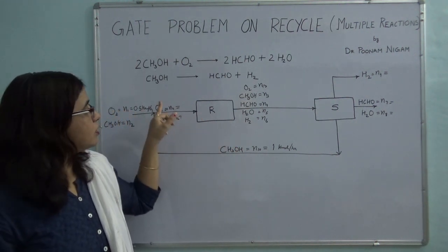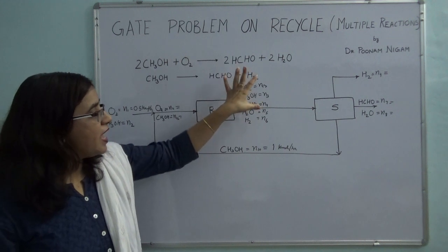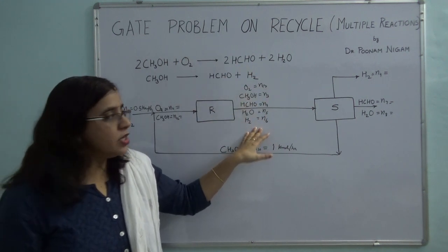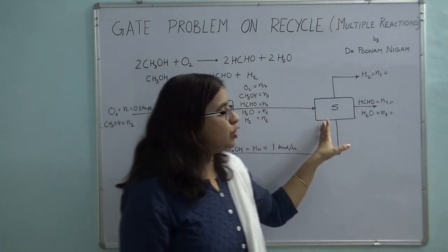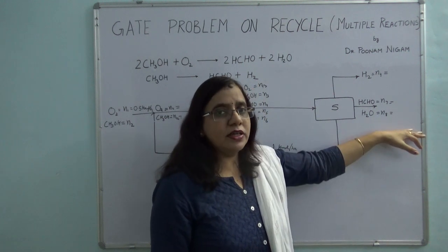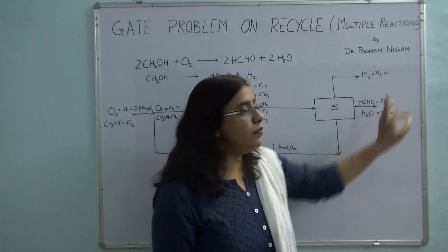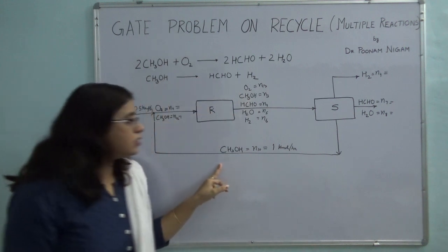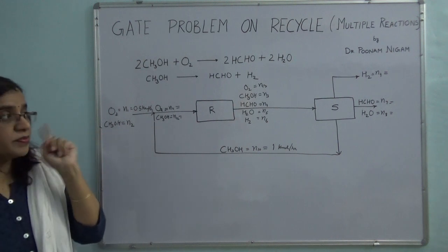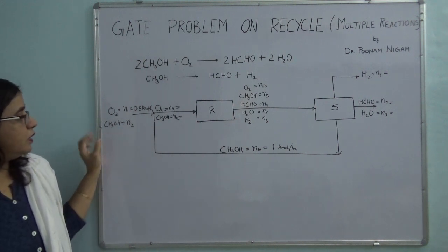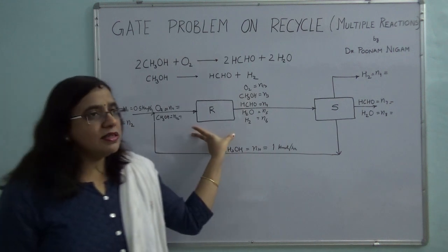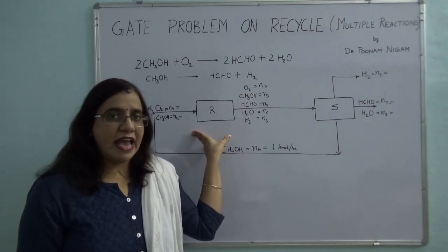It is given that oxygen is completely consumed in the reactor. The stream from the reactor goes into a separator, from where formaldehyde and water are drawn as the product, hydrogen is removed, and whatever methanol is recovered is recycled back to the reactor. You have been asked to calculate the amount of methanol in the fresh feed and the single pass conversion over the reactor.